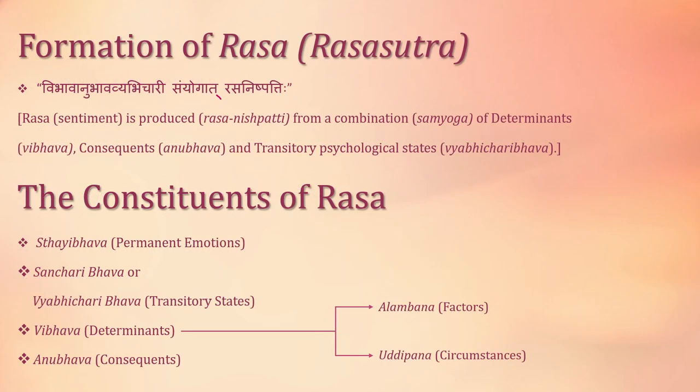Now this kind of aesthetic pleasure or rasa is produced from the combination of determinants, consequence and transitory states. As it is said here: Vibhava Anubhava Vyavichari Sanyogat Rasa Nishpatti. This is the whole process of the formation of rasa in the deep psyche of human beings.